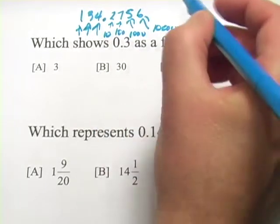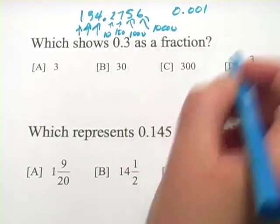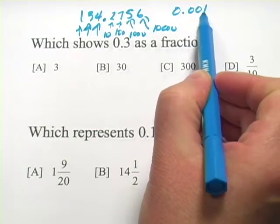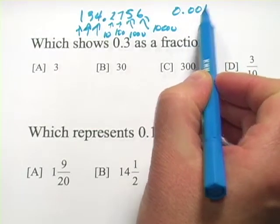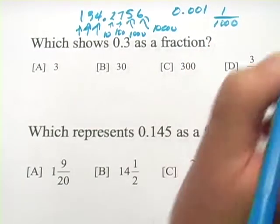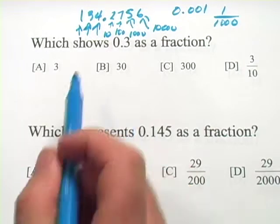So if I had a number like 0.001, this is the 10's, this is the 100's, this is the 1,000th. This would be 1,000th, and the way I would write it would be like this, 1 over 1,000th. So that should get us started.